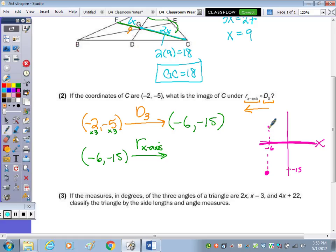so that now it goes over here. And I'm still going to be left 6, I'm just going to be, instead of down 15, up 15. So the answer is (-6, 15).